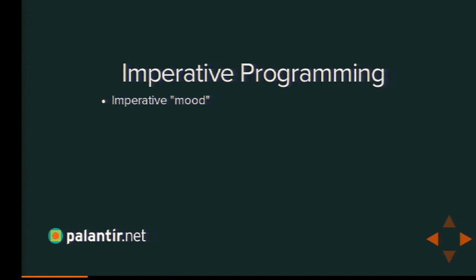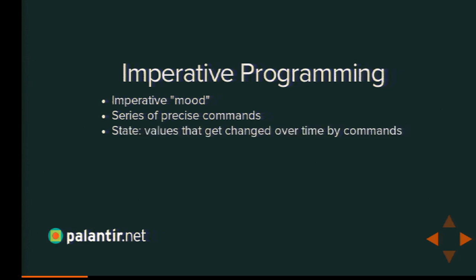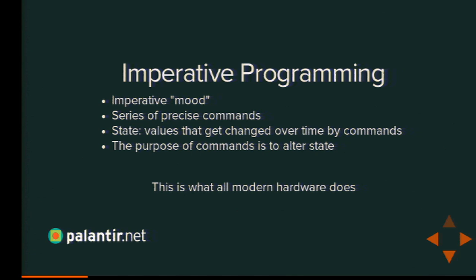Imperative programming is a series of commands, a series of instructions — very precise commands. Remember, computers are stupid; they only do what you tell them. And it has this concept called state: values that are pieces of information that change over time. The point of a program in imperative programming is to change state — to change the value of something. This is how virtually every piece of modern hardware works, from the phone in your pocket to the giant servers running Wall Street. They're all, at the hardware level, just pushing state around.